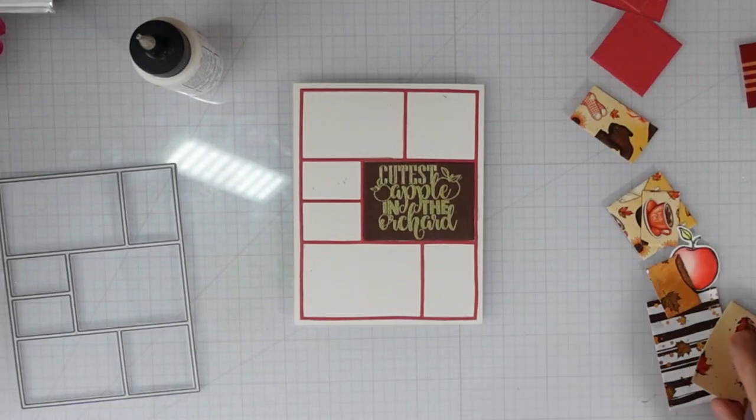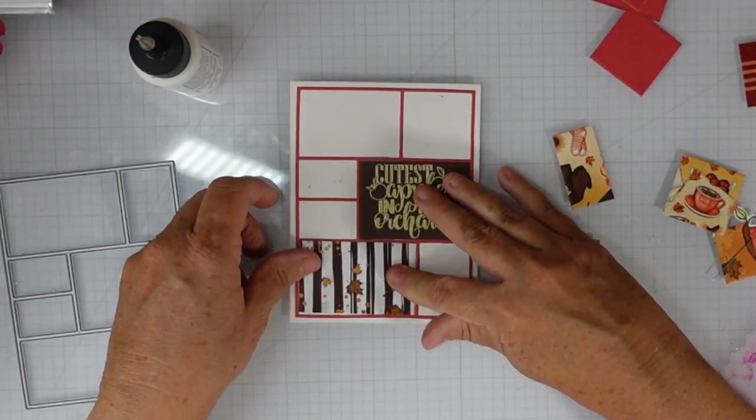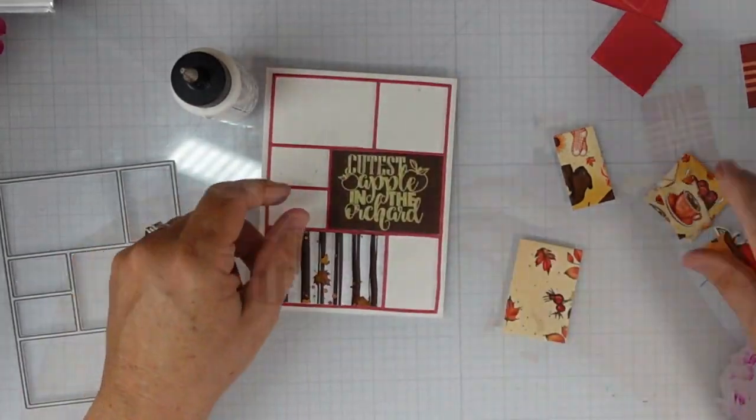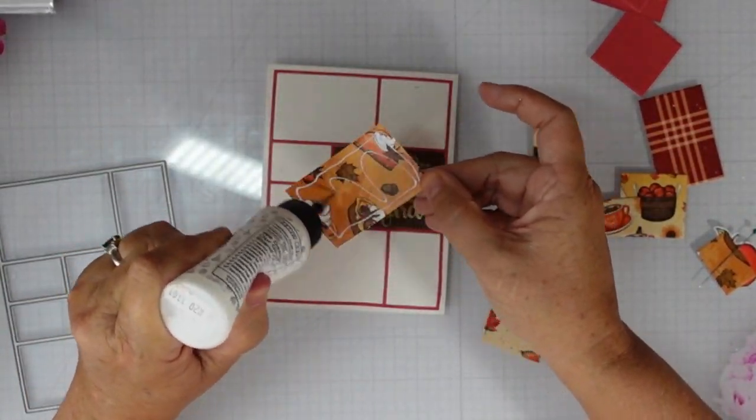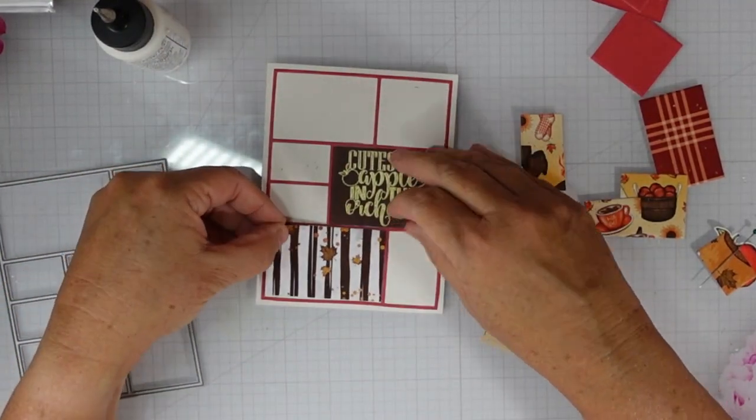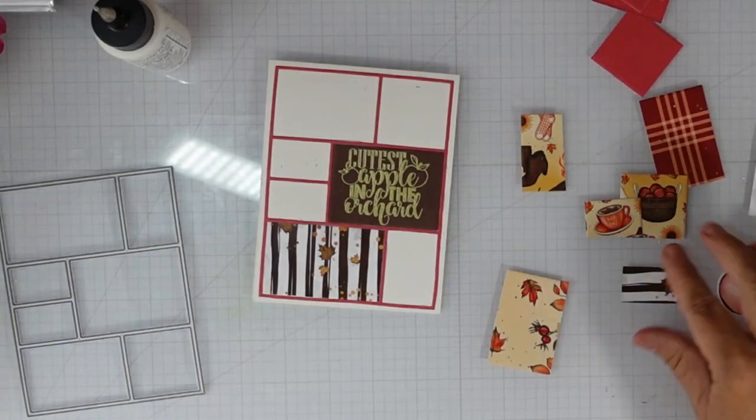The rest of my pieces are going to fit nicely. Now I lost a piece. I had no idea what I did with it, but I did cut two pieces of that brown and white striped paper with the leaves and I lost the little one.